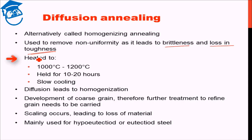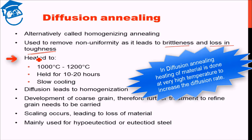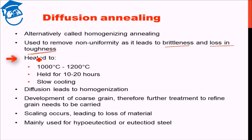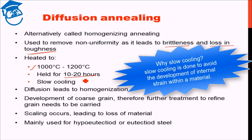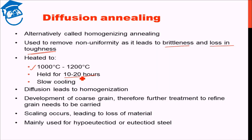During diffusion annealing, we actually heat the material to quite a high temperature because the idea is that we need to increase the diffusion rate. So we heat it to 1000 to 1200 degrees Celsius and hold it at that temperature for a sufficiently long time, ranging from 10 to 20 hours. Once the process is complete, we slowly cool it back. We don't drastically cool it because that might cause development of internal strains. The diffusion occurring at such high temperature and long time leads to homogenization.